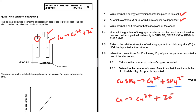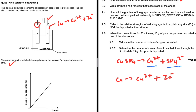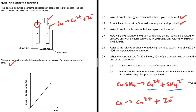Let's take a look at 9.4: how will the gradient of the graph be affected as the reaction is allowed to proceed until completion — will it increase, decrease, or remain the same? The diagram represents the purification of copper, and the cell also contains zinc, silver, and platinum impurities. The graph shows the initial relationship between mass of copper deposited versus time.